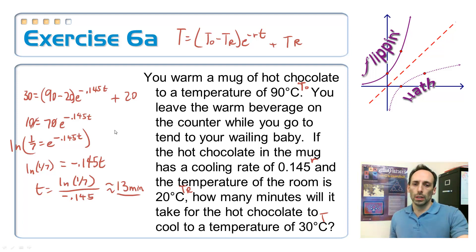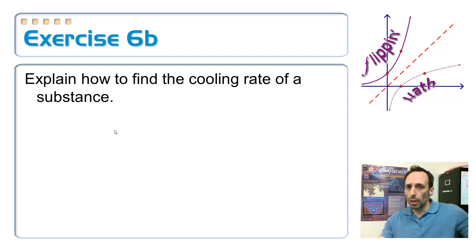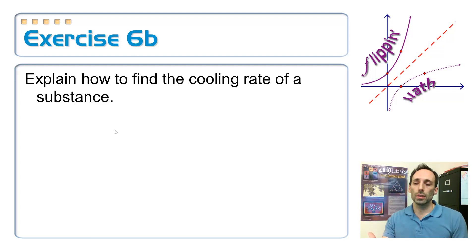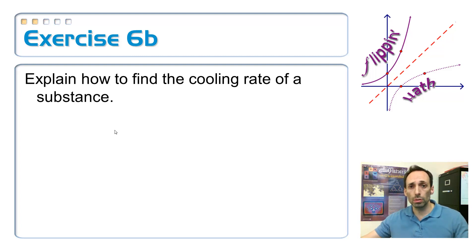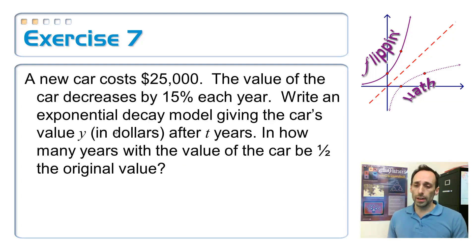That problem already gave us a cooling rate of 0.145. But if you just had a substance and wanted to find its cooling rate, you'd measure the temperature at two different times, then use those in the equation and solve for R instead of t. In fact, this is one of the methods used at a crime scene to determine how long someone has been dead — based on the body's cooling rate, the ambient temperature, and knowing the initial body temperature is 98.6 degrees.